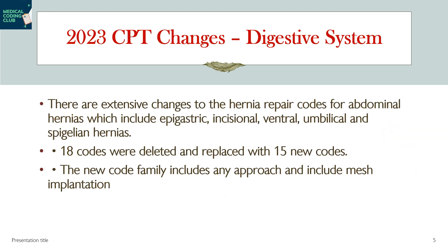There are extensive changes to the hernia repair codes for abdominal hernias, which include epigastric, incisional, ventral, umbilical, and spigelian hernias. 18 codes were deleted and replaced with 15 new codes. The new code family includes any approach and includes mesh implantation, so the approach itself includes mesh implantation.